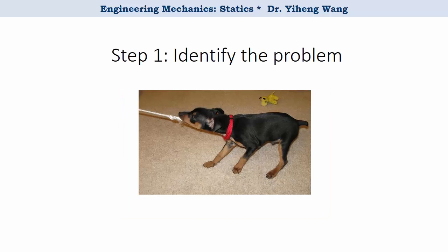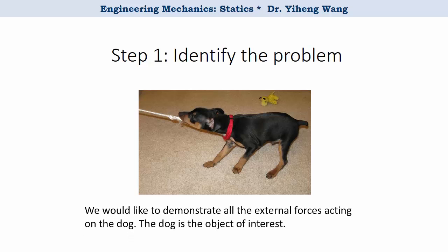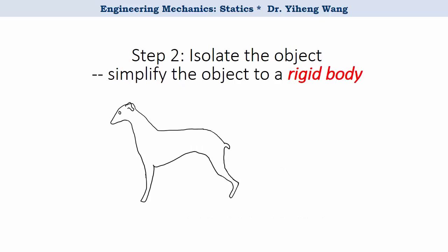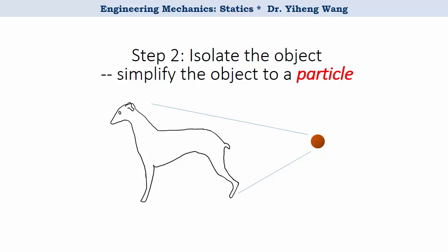Step one: we need to be clear about what we are interested in analyzing and what problem to solve for. In this case, we'd like to analyze the forces acting on the dog. Step two: we need to isolate the object from its surroundings and sketch it. It is crucially important that you are clear what the chosen system is — in this example, we don't include the string, the toy in the background, or the floor, just the puppy. We can simplify our drawing to a block representing a rigid body, or even a dot to represent a particle, depending on your goal.